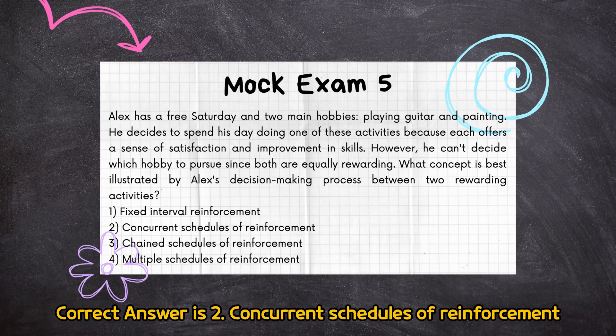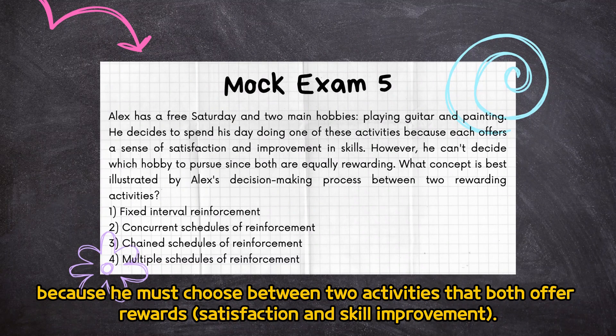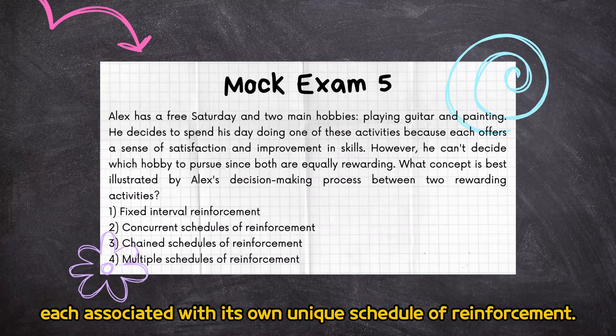Correct answer is 2: concurrent schedules of reinforcement. Alex's decision-making process between playing guitar and painting is an example of concurrent schedules of reinforcement, because he must choose between two activities that both offer reward — satisfaction and skill improvement. This scenario illustrates how individuals make choices between simultaneously available reinforcement schedules, each associated with its own unique schedule of reinforcement.